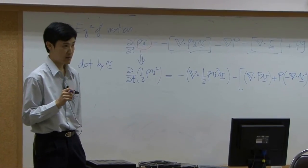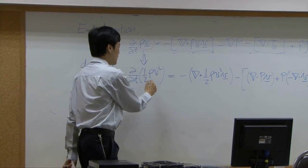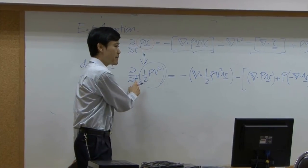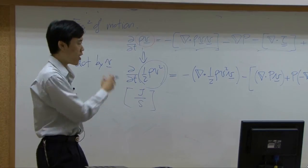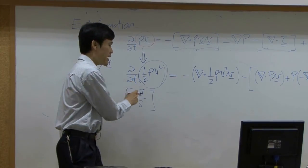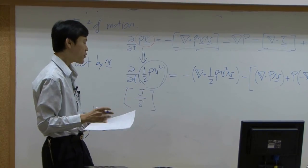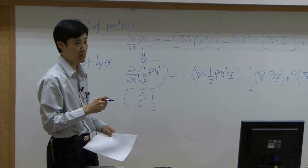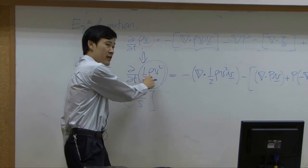Looking at the units of this equation, this term is kinetic energy with respect to time, so the unit should be joules per second. By physical meaning, this term represents the rate of change in kinetic energy in your system — or more precisely, the rate of increase of kinetic energy per unit volume, because we have rho here, which means mass over volume.